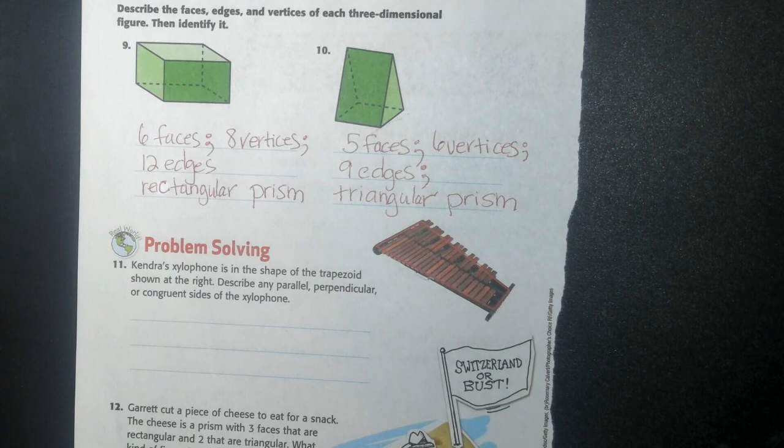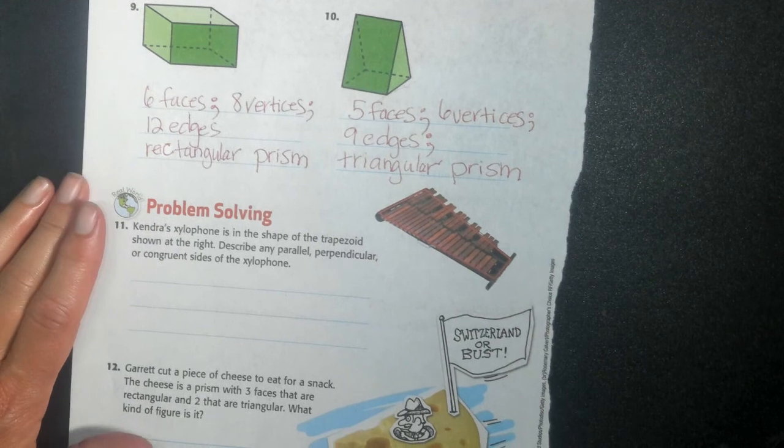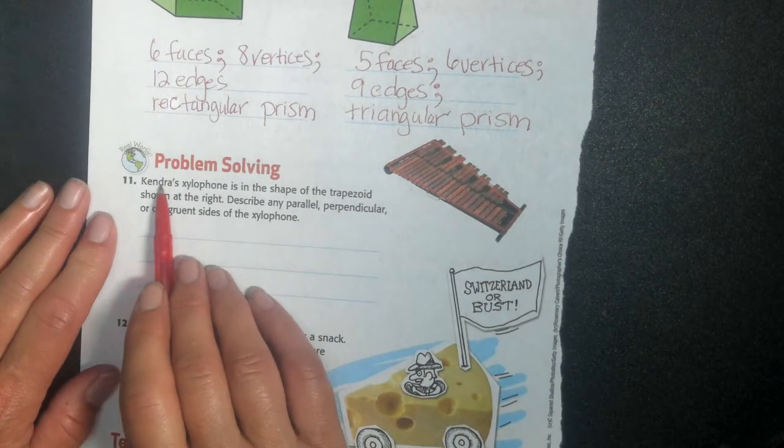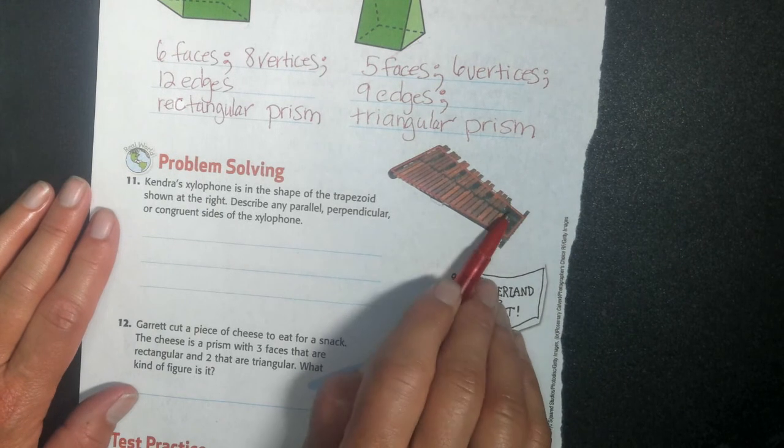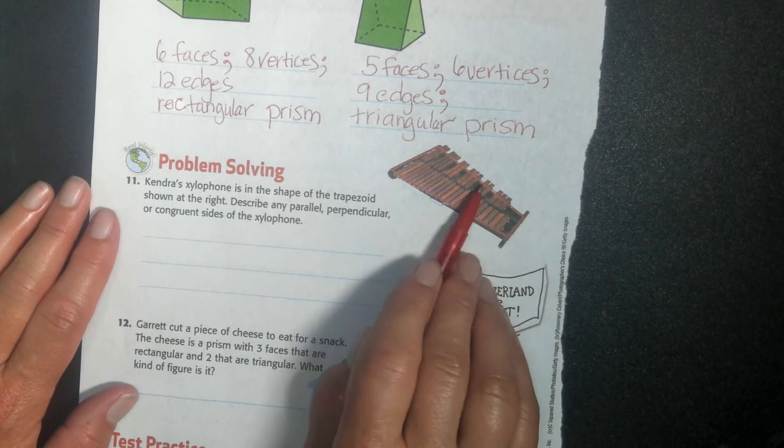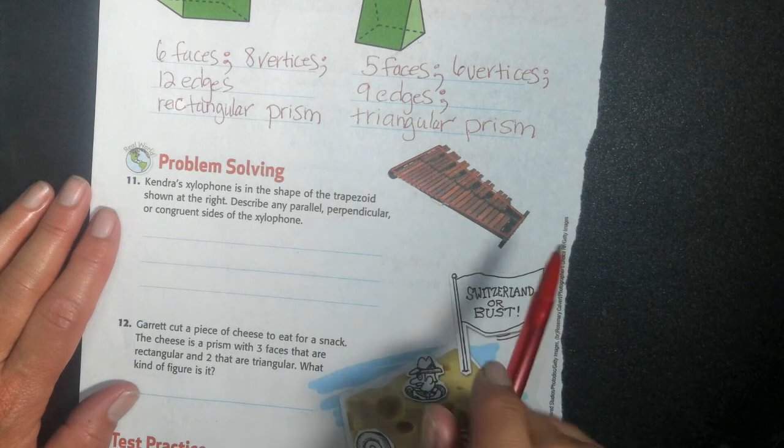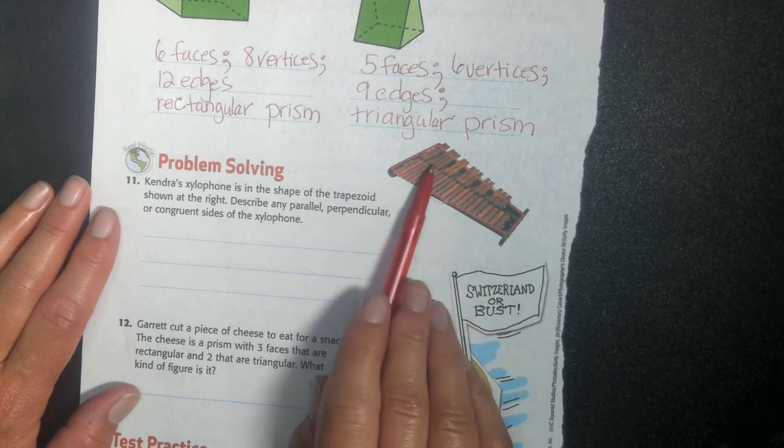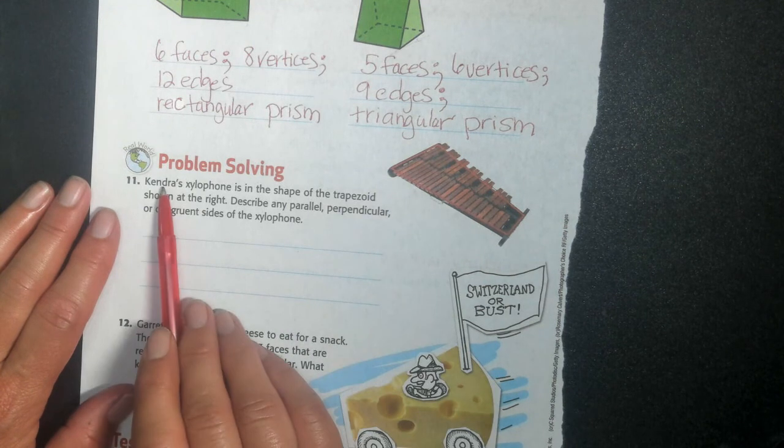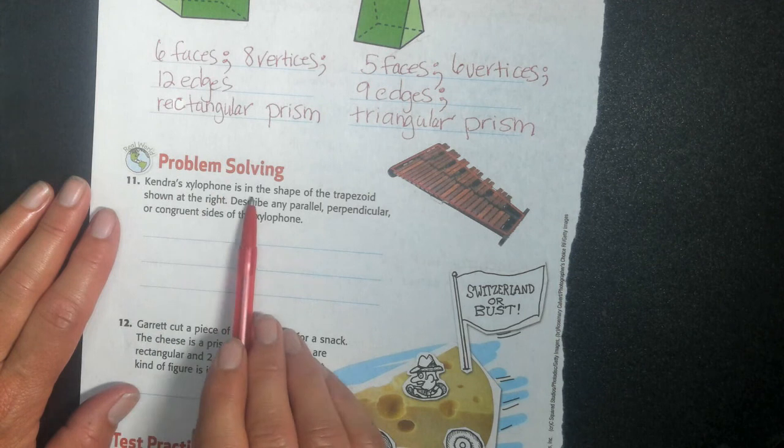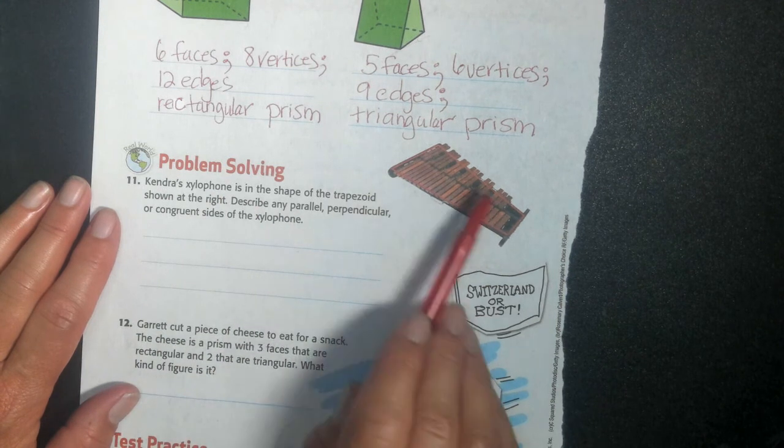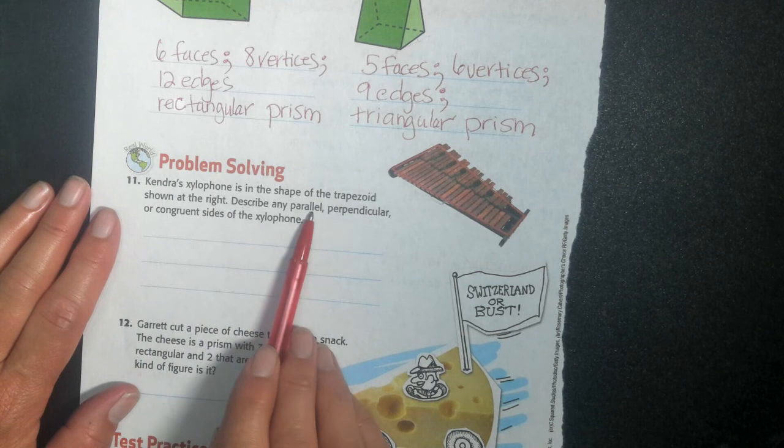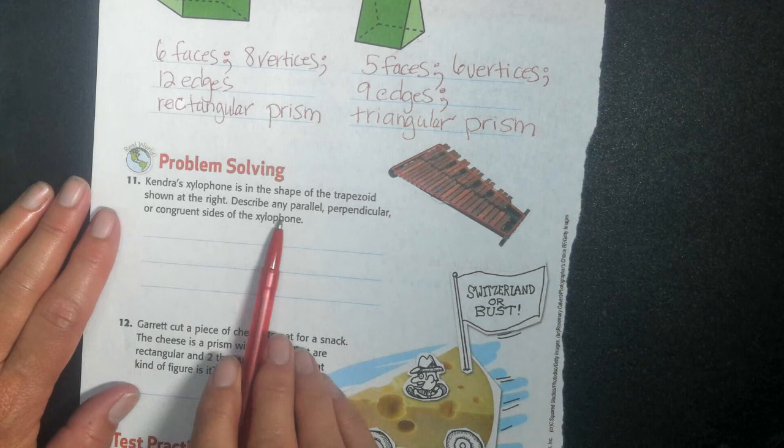The prism is just letting me know it's three-dimensional, triangle, triangle. Here is Kendra. Kendra has a xylophone. There it is. It makes music. I hit it with a little hammer kind of thing. And each one has a different sound. And I can do my notes, A, B, C, D. Anyway, Kendra's xylophone is a shape of a trapezoid shown at the right. Describe any parallel, perpendicular, or congruent sides of the xylophone. It is considered a trapezoid. Two sides are parallel.